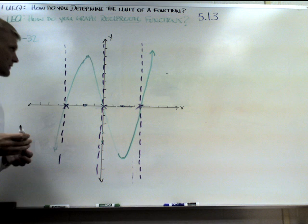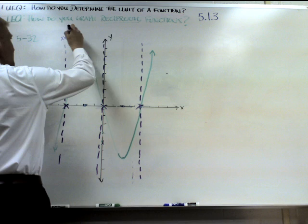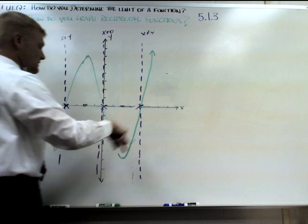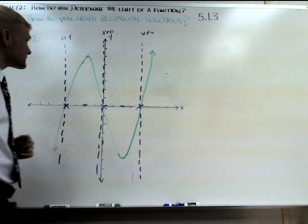So x cannot equal negative 4, x cannot equal 0, and x cannot equal 4. That means the equation for this green graph here has three roots at negative 4, 0, and 4, that means it's a cubic.